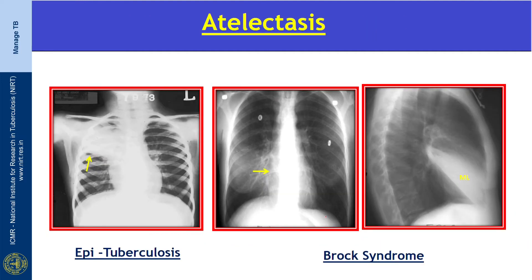Atelectasis is frequently present in primary tuberculosis due to airway compression by adjacent lymphadenopathy or airway stenosis. The atelectasis is most notable in the right upper lobe anterior segment — we call it epituberculosis — and it is also seen in the middle lobe, popularly known as Brock syndrome. This X-ray shows middle lobe collapse with silhouetting of the right cardiac border. The lateral X-ray classically shows a wedge-shaped middle lobe collapse, usually seen in primary pulmonary tuberculosis.